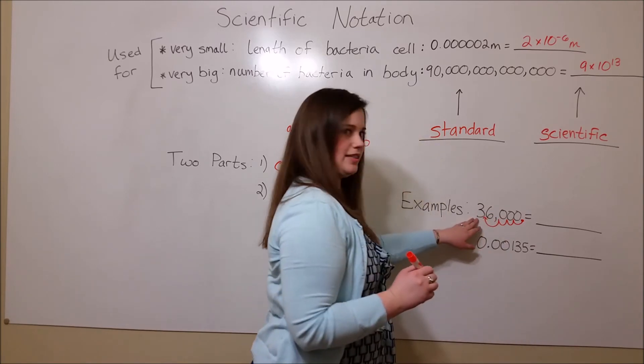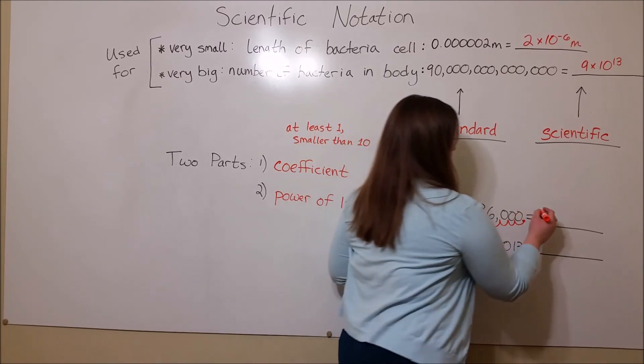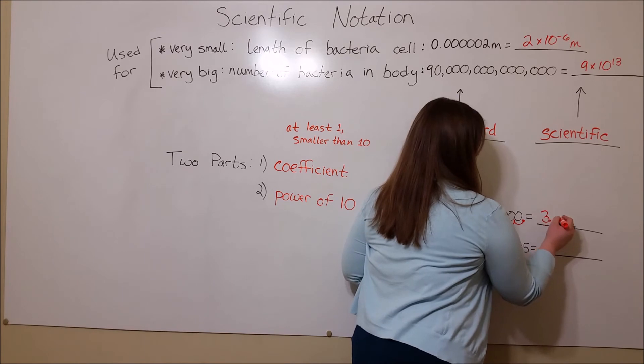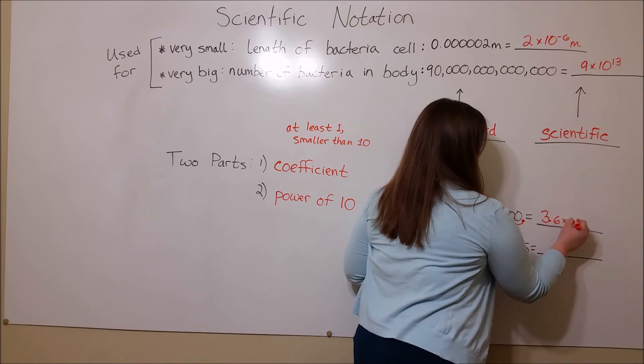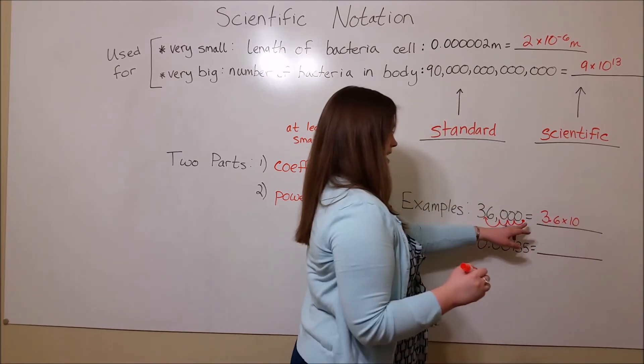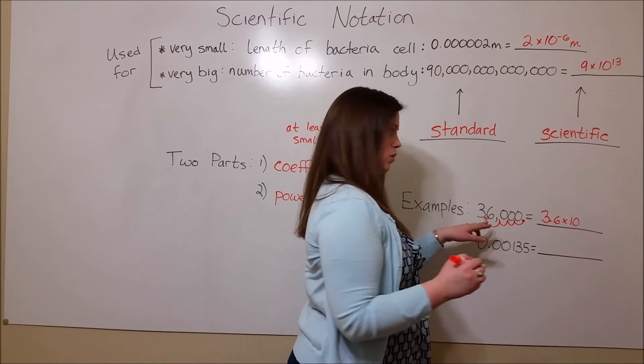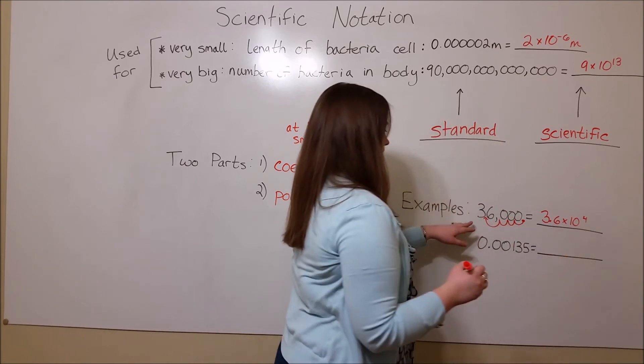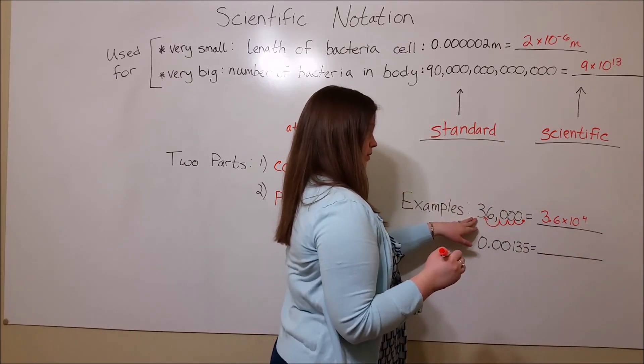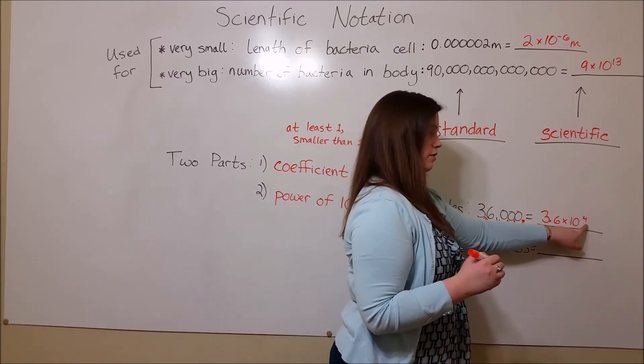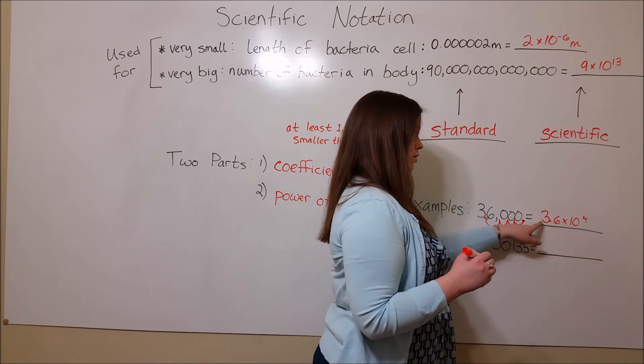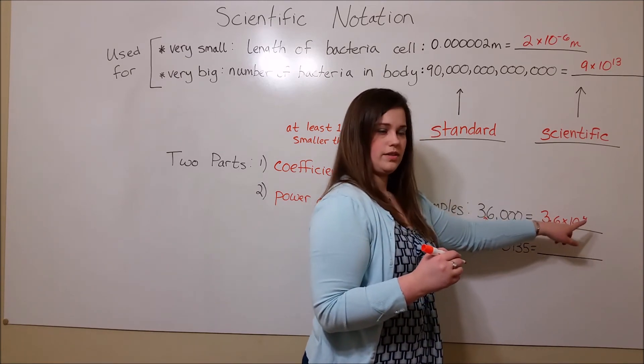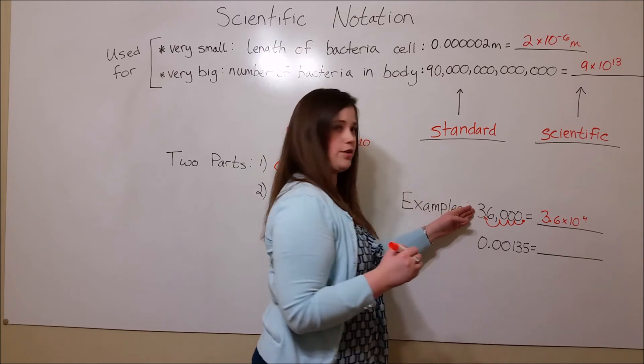Four places to where it separates the 3 and the 6. That gives us a coefficient of 3.6. And here the power of 10 is 4, but don't forget the sign. Because this is a big number, we confirm that the 4 here is positive. So 3.6 times 10 to the 4th is the scientific notation for 36,000.